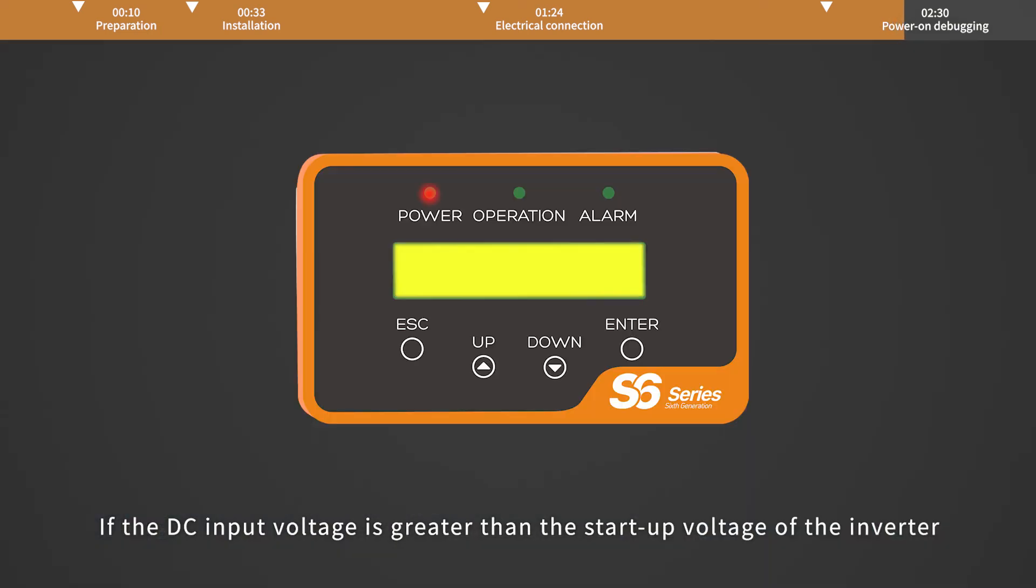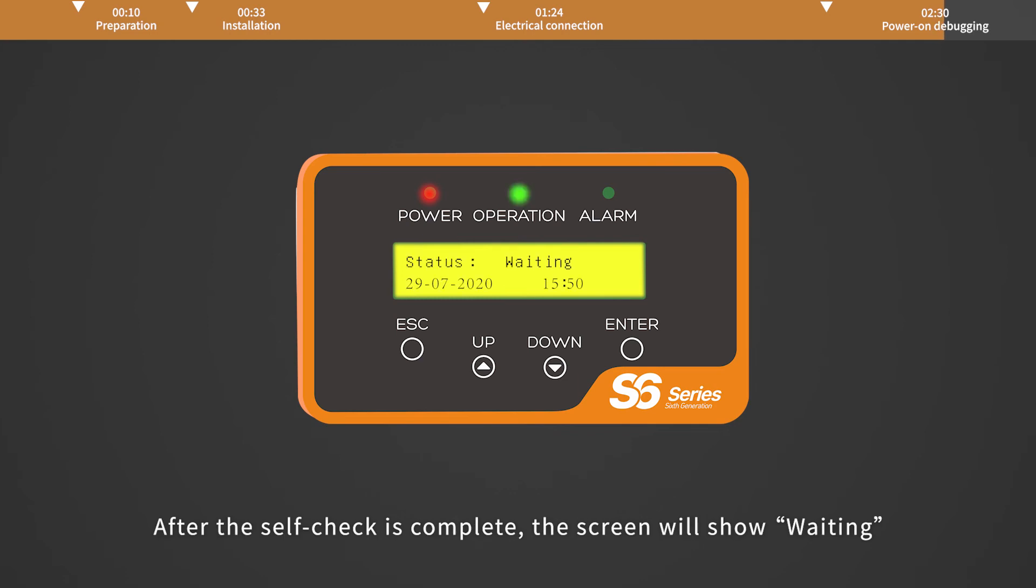If the DC input voltage is greater than the startup voltage of the inverter, the inverter will start up. After the self-check is complete, the screen will show waiting. After the local mandatory delay ends, the inverter will start normal operation.